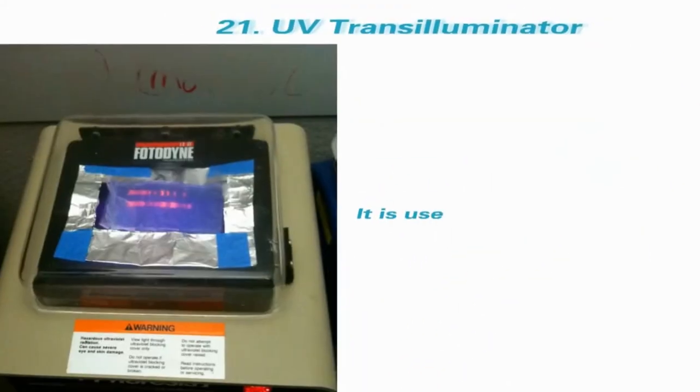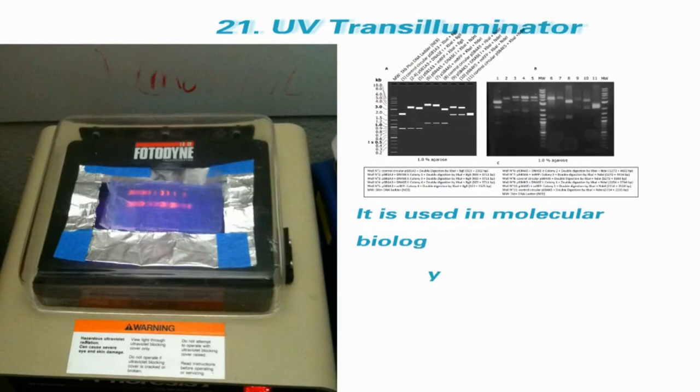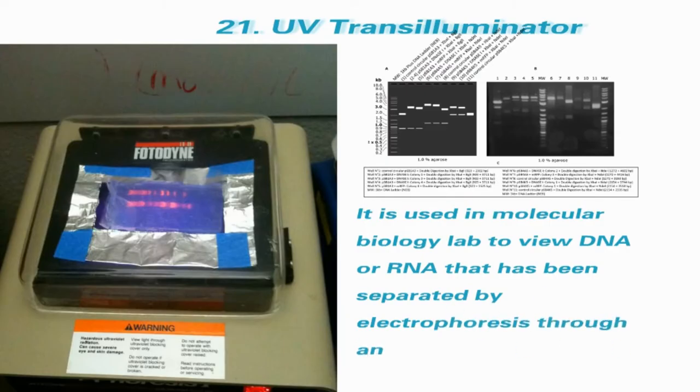UV Transilluminator. It is used in molecular biology lab to view DNA or RNA that has been separated by electrophoresis through an agarose gel.